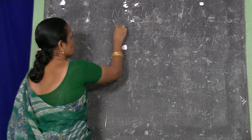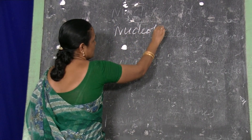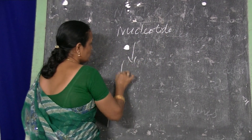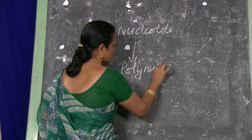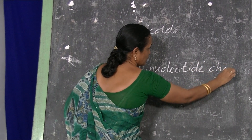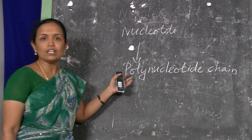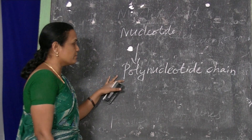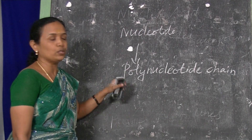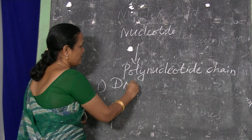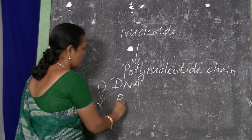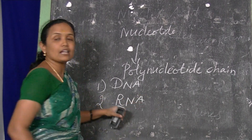Each nucleotide is linked with one another to form a polynucleotide chain, or we can say it as a nucleic acid. On the basis of sugar present in the nucleic acid, it is classified into two types: one is DNA, that is deoxyribonucleic acid, and the second one is RNA, that is ribonucleic acid.